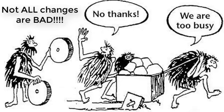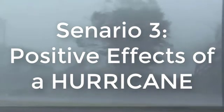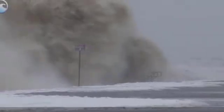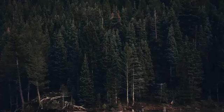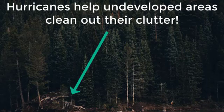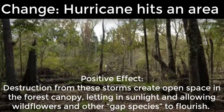But not all changes are bad. Sometimes there's a silver lining to a swirling 120 mph cloud of wind. That's right — hurricanes can be helpful. A hurricane can be very devastating to a developed area, and humans have been battling them for centuries. But if you look at undeveloped areas, they could actually help clean out the clutter. Hurricanes can help wipe out invading trees that have pushed aside native ones. Destruction from these storms creates open space in the forest canopy, letting in sunlight and allowing wildflowers and other gap species to flourish.